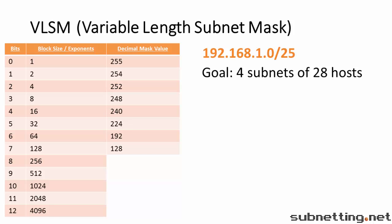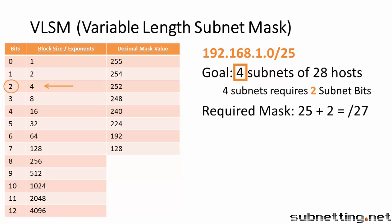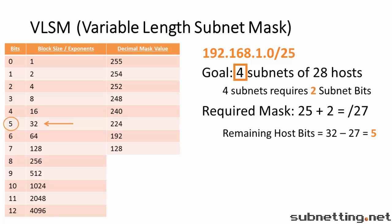Now we find the lowest power of 2 that is greater than or equal to 4. That is 4, which means we need 2 subnet bits. Now we add 2 to slash 25 and we get slash 27. Let's check to make sure we have enough host bits left over to accommodate 28 hosts per subnet. 32 minus 27 equals 5 host bits. We look in the bits column and see that 2 to the fifth power is 32 total addresses. 32 minus 2 gives us 30 hosts per subnet. Since we only need 28 hosts per subnet, our subnet mask of slash 27 is sufficient. So our answer would be slash 27.